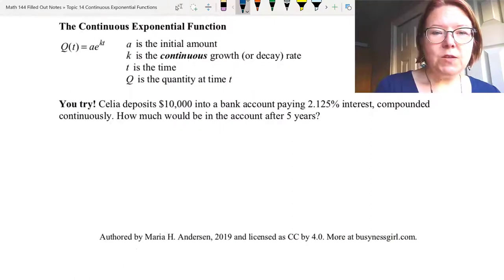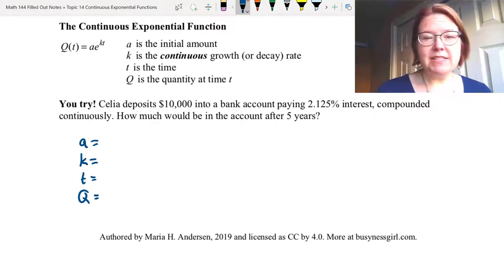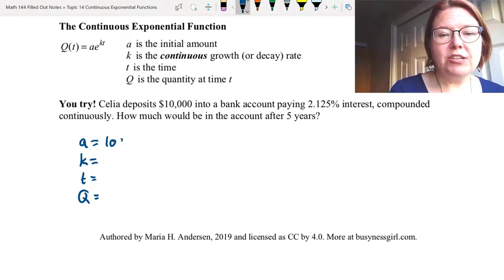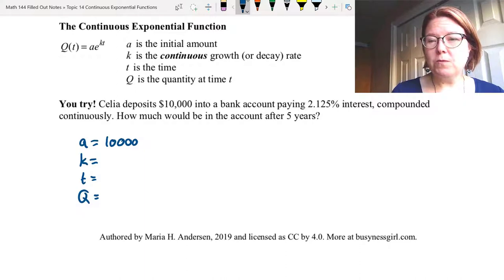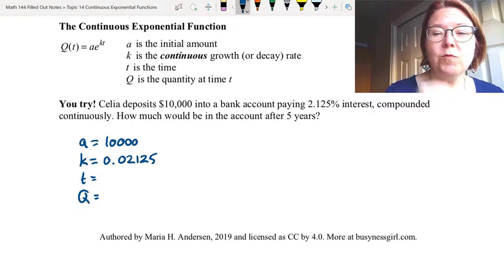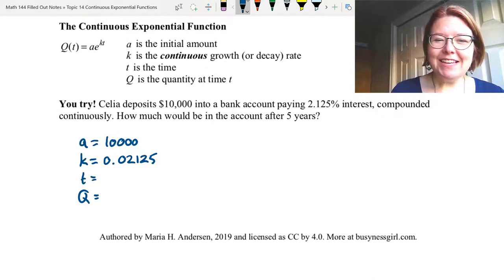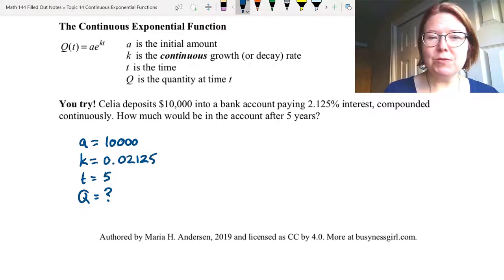Okay, let's see how you did. Let's write out our lowercase a, lowercase k, lowercase t, and capital Q. What do we know and what do we need to find? Celia deposits $10,000, so that would be the initial value, the a value. K is the continuous growth rate, which is 2.125% compounded continuously, so that's a k value of 0.02125. Remember, we write these rates as decimals. And the t is five years. We want to know how much is in the account after five years. Capital Q is what we're trying to find.